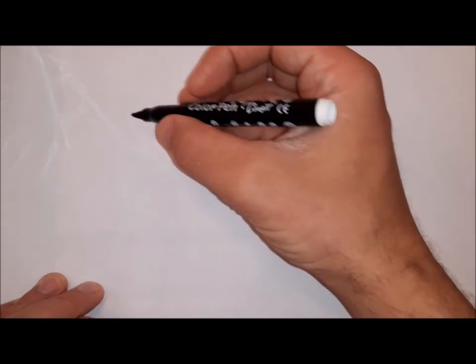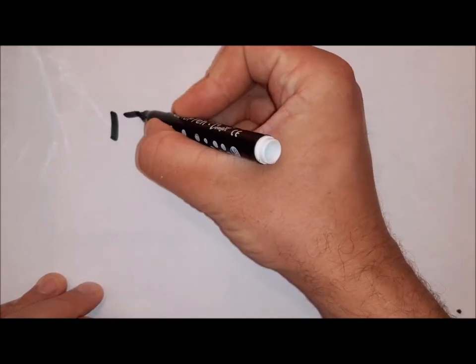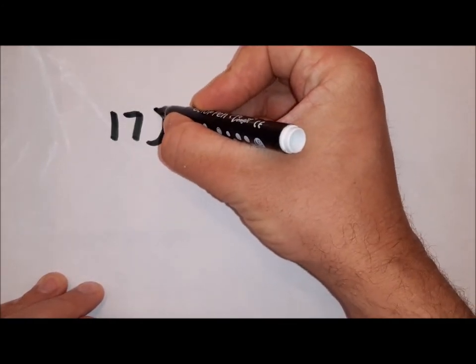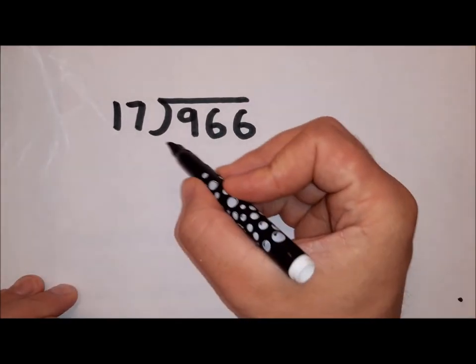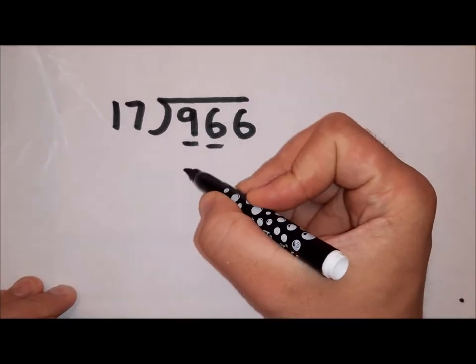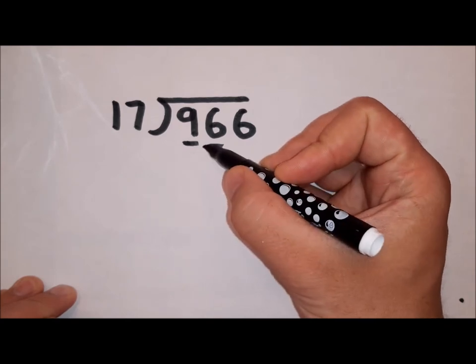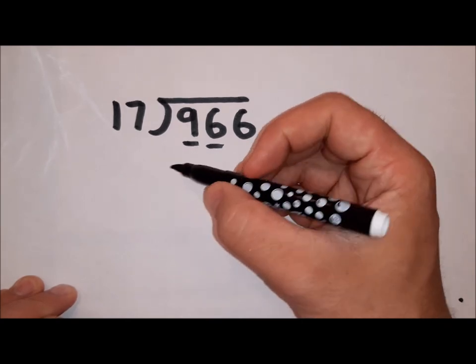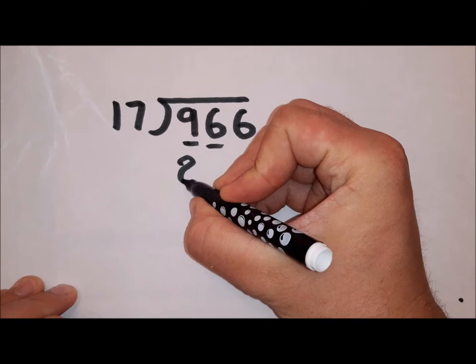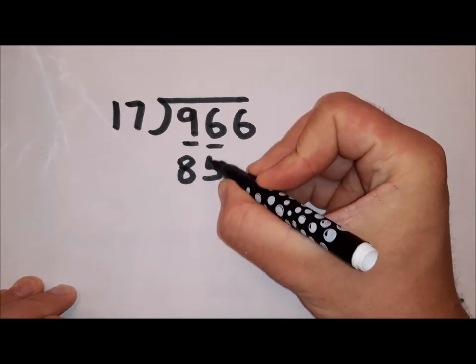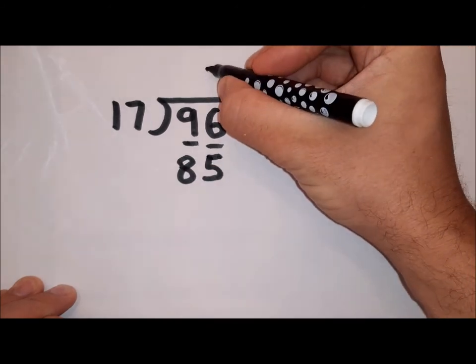Let's show you one more example just quickly now. Again we write out our sum. And we start by doing 96 divided by 17. I know that 10 lots of 17 is 170. So 5 lots is going to be half of that, which is 85.